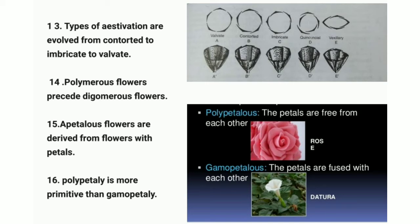Point fourteen: polymerous flowers precede oligomerous flowers. Polymerous flowers have three or more sepals and petals, while oligomerous flowers have fewer sepals and petals. Point fifteen: apetalous flowers are derived from flowers with petals.